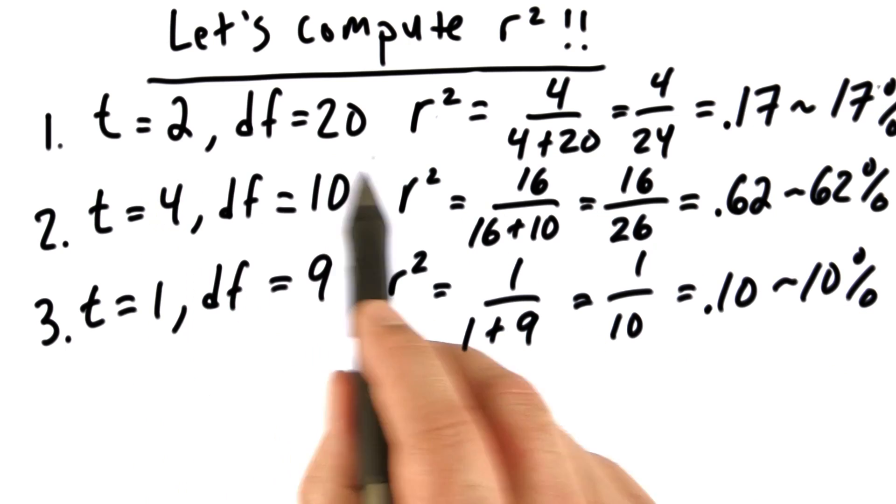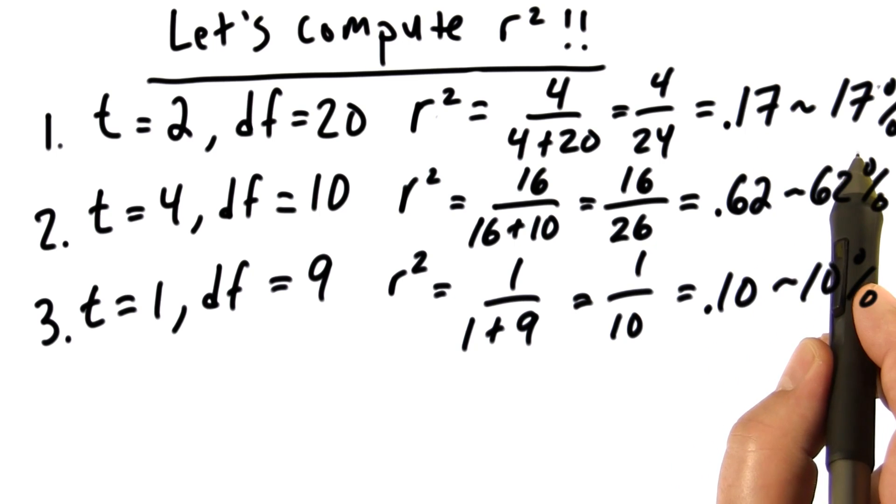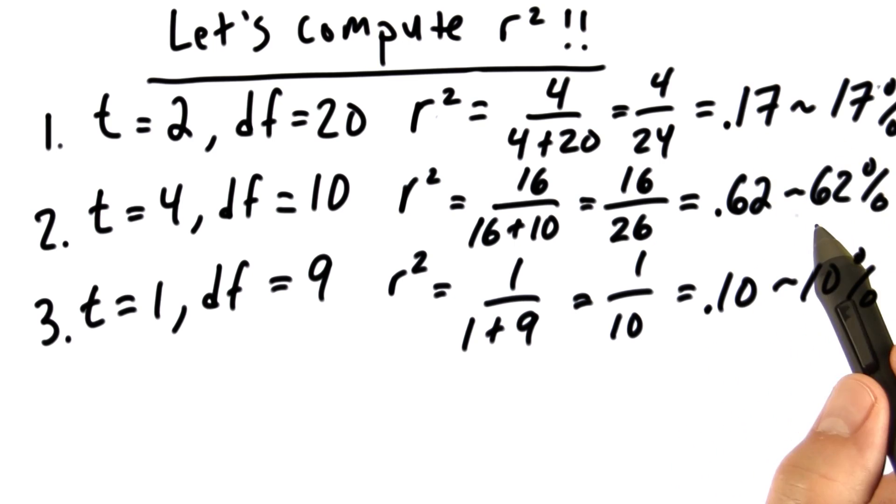So in each of these examples, we see how to get r squared, how to convert it from a proportion to a percentage, and now let's interpret that. For number 1, we'd say that we can explain 17% of the variation in our dependent variable by knowing our other variable. Here we can explain 62%. Here we can explain 10%. Obviously, we're explaining more variation in this example than the other two.